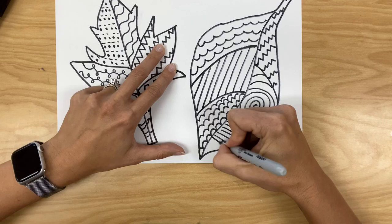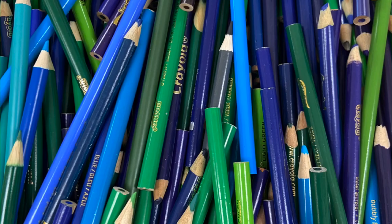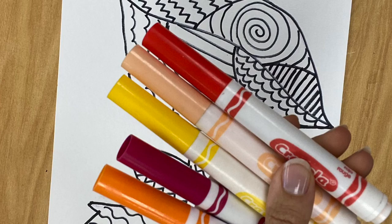Once all the sections of each leaf are filled with different types of lines, then you are going to reference the Google slide again and study warm and cool colors. Next we are going to be filling the insides of our leaves using warm colors. Warm colors are reds, oranges, yellows, and pinks.